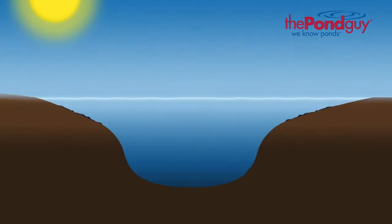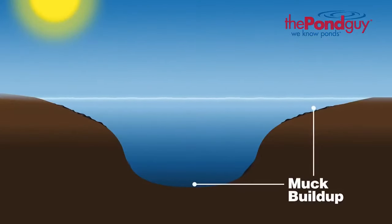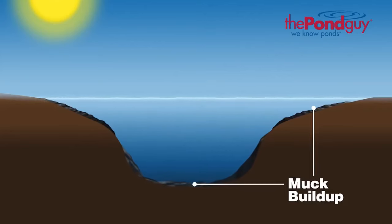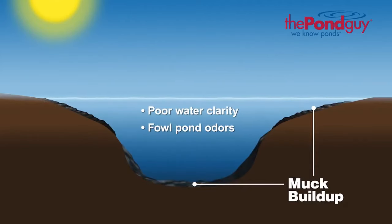Pond muck continuously releases nutrients into the water column. If left alone, pond muck will eventually lead to poor water clarity, foul pond odors, and limit recreational activities.